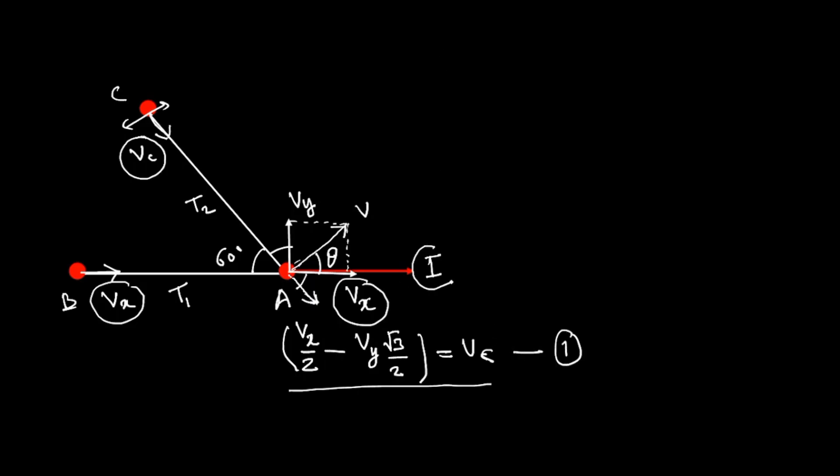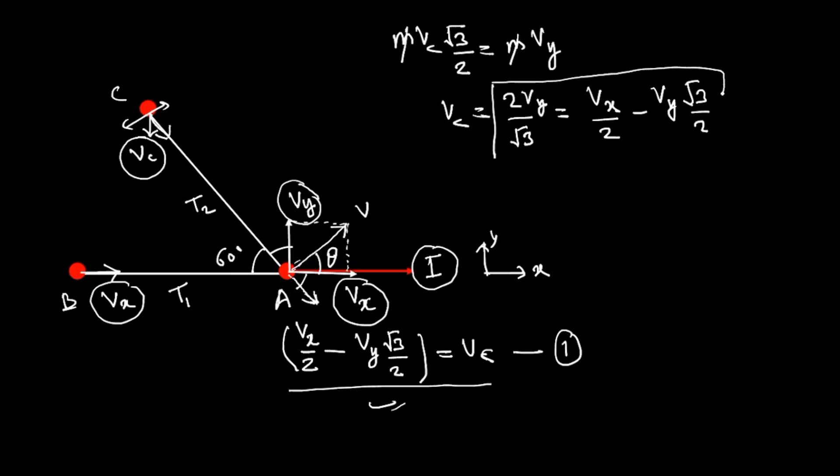The impulse I is given in X direction. In Y direction there can't be any momentum after the impact. The momentum because of this component and this must be equal and opposite and should cancel out. You can write: M × Vᴄ cos 30° = M × Vᵧ, that is Vᴄ√3/2 = Vᵧ. If you cancel out, Vᴄ = 2Vᵧ/√3, and you take it from equation 1: Vₓ/2 - Vᵧ√3/2. You are getting the relation between Vₓ and Vᵧ. So you can easily find out tan θ.